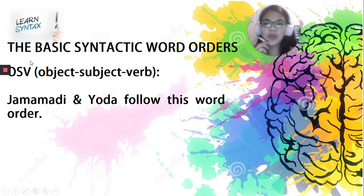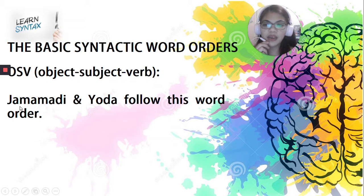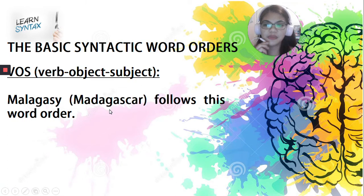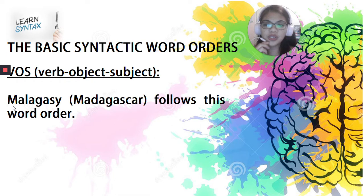Then we have the OSV word order, which follows the sequence of object, subject, and verb, and this is commonly used by these languages. And then we also have the VOS, or verb, object, subject word order, which is being followed by this language.